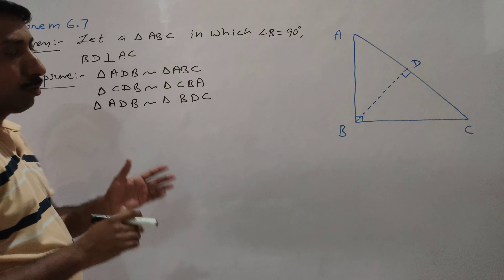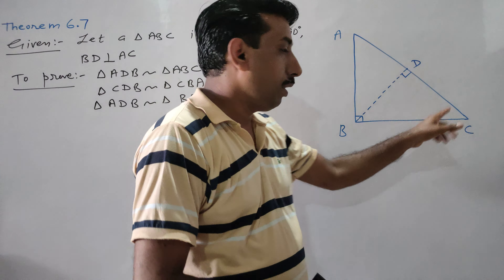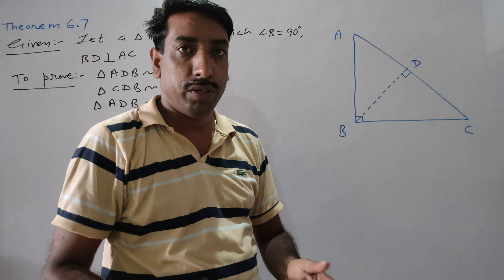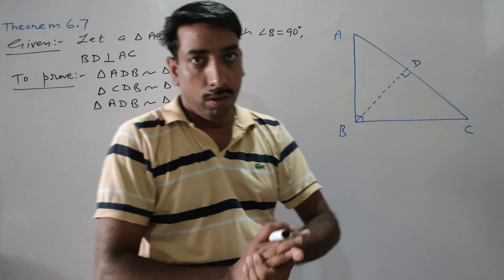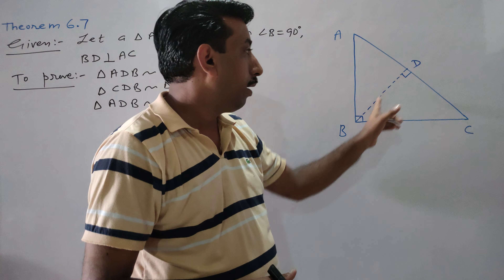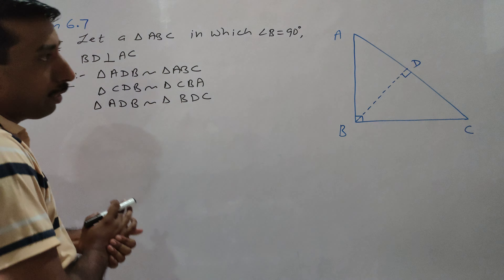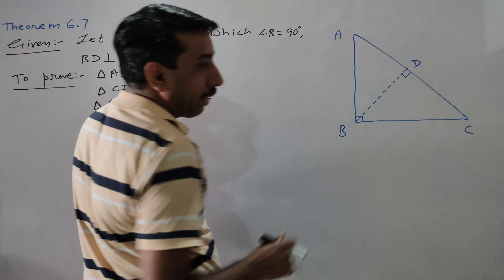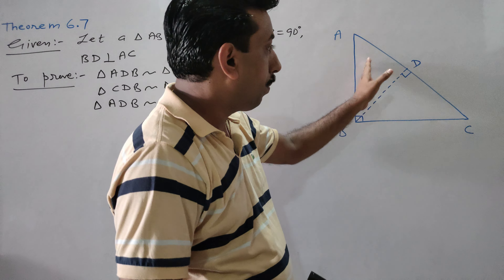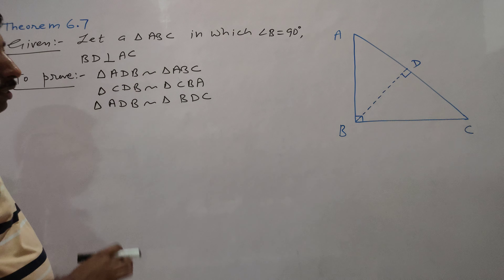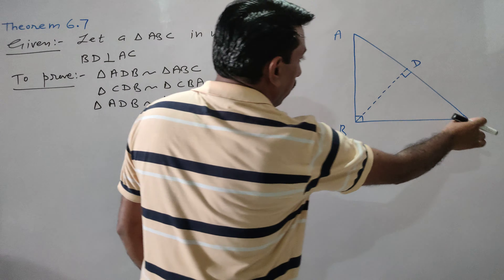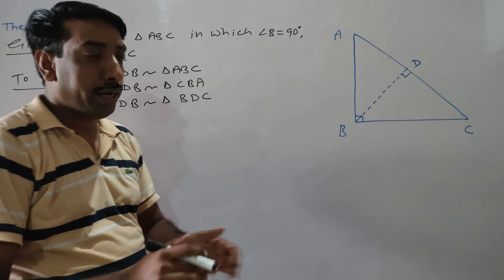So we have drawn triangle ABC. We have considered triangle ABC in which angle B is 90 degrees — so ABC is a right angle triangle. We have to show that triangle ADP is similar to triangle ABC, and triangle CDB is similar to triangle ABC.